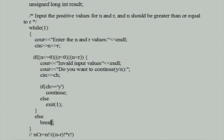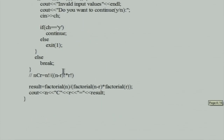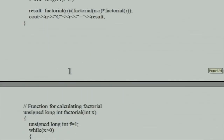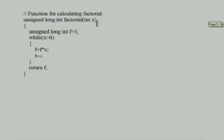For quiz questions, the first is: formal parameters of a function can be used where? Options: anywhere in the program, anywhere in the function, anywhere outside the program, anywhere outside the function. The correct answer is 'anywhere inside the function' because formal parameters are defined in local scope.